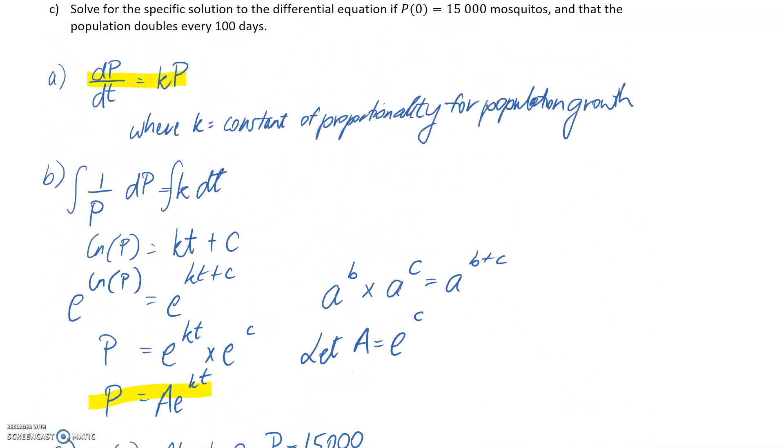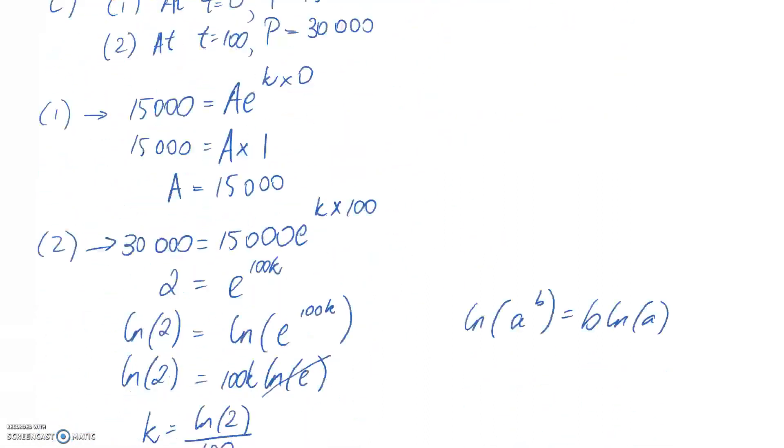Looking back at our equation, the left side is dP/dt, which is mosquitoes per day. On the right, k has units of days^(-1), multiplied by P (mosquitoes). So both sides have units of mosquitoes per day, which confirms the units are balanced.